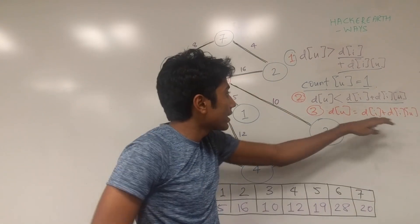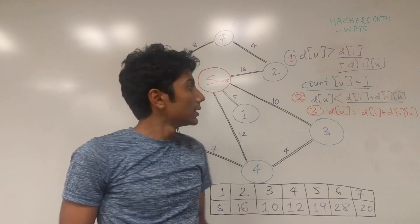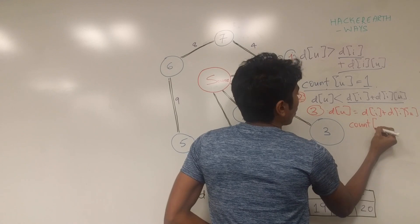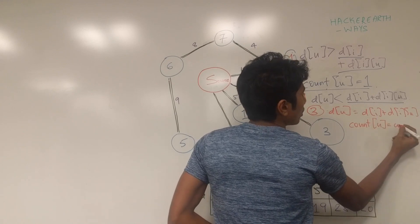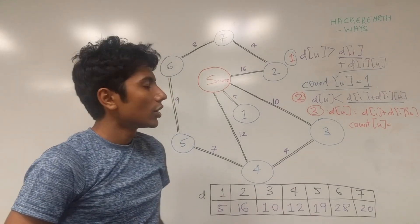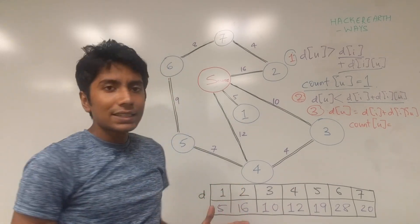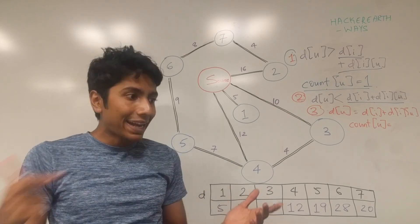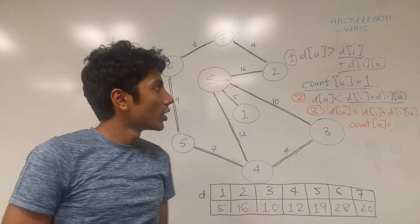Then you say that count of U is equal to what? Logically we can see that something needs to be added to this. The number of ways to get to U has to be added. But by how much?